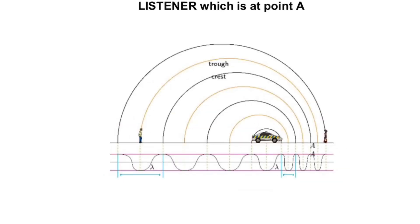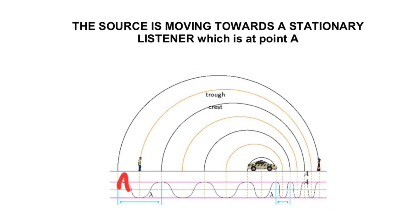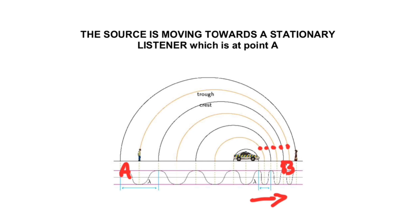Now let's look at this example. You are still standing at point A and your friend is standing at point B, but the car is now moving towards point B. As you can clearly see, there is a compression of the crests and the troughs — a smaller wavelength and, as a consequence, a higher frequency. From this sketch, you can see that if a source is moving towards a stationary observer, your friend at point B is going to observe a higher frequency compared to the one emitted at the source.